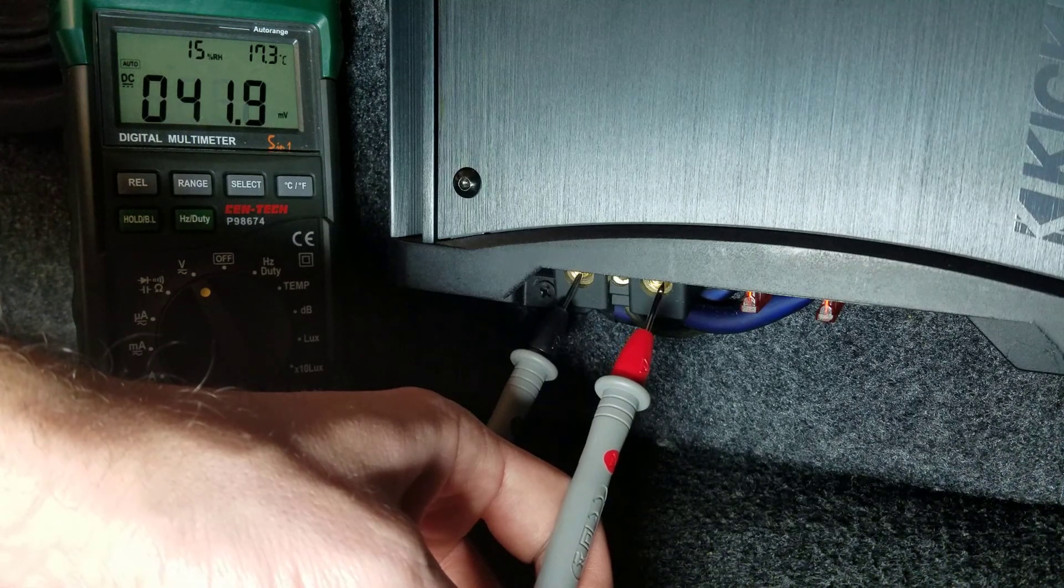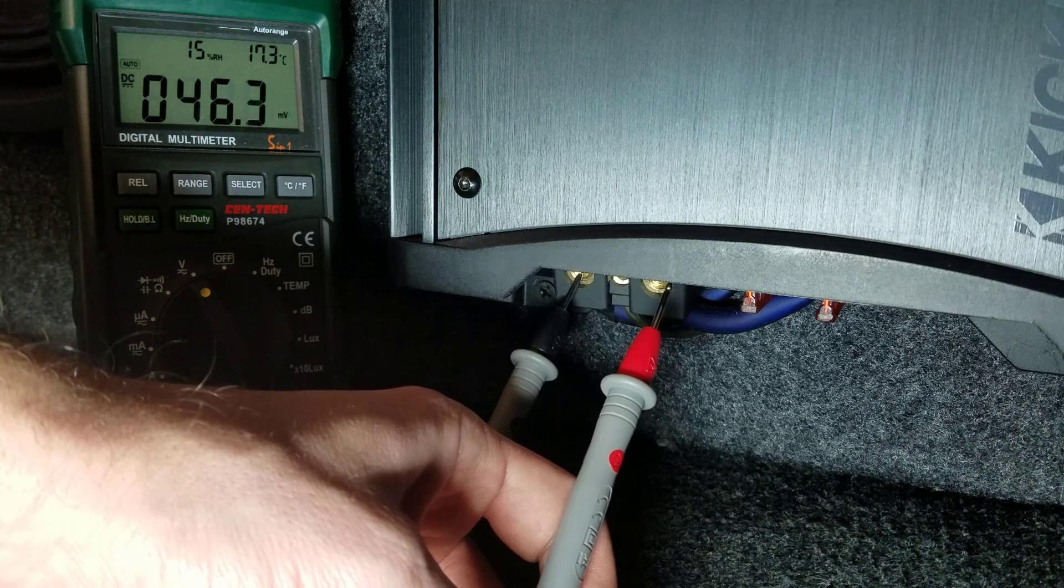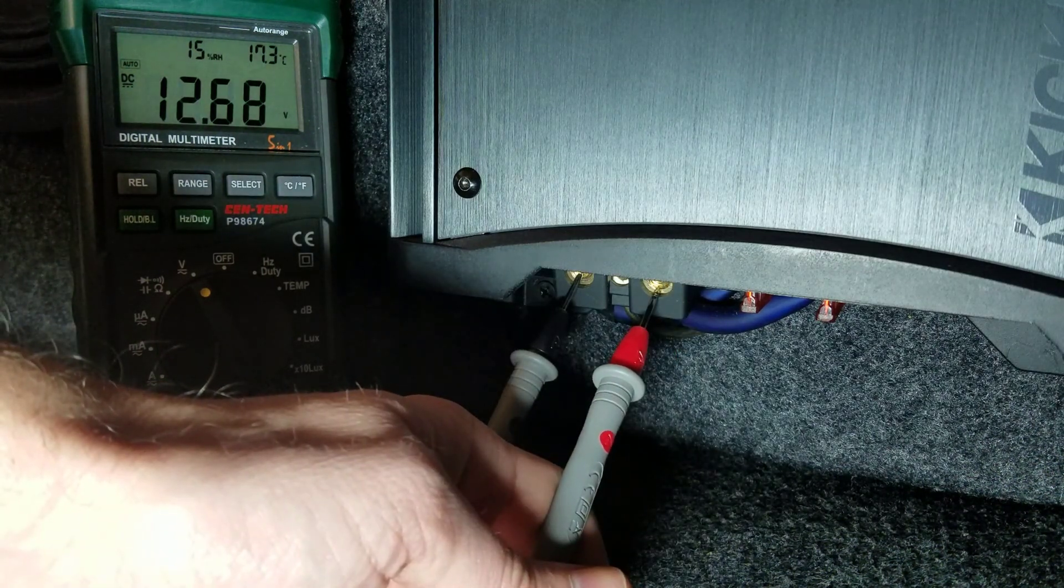If you want to verify that you have 12 volts at the power input terminals in your amplifier, touch the black lead to the negative terminal and the red lead to the positive terminal. Boom, 12 volts.